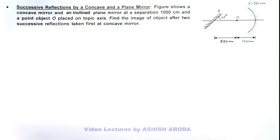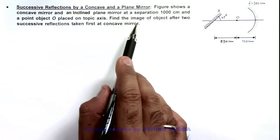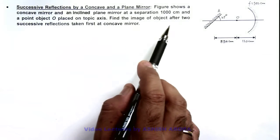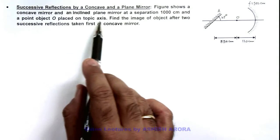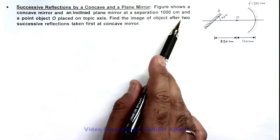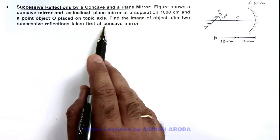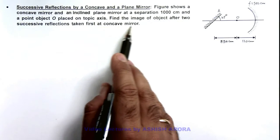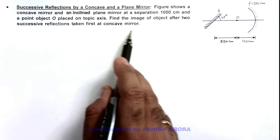In this illustration we'll study about successive reflections by a concave and a plane mirror. Here the figure shows a concave mirror and an inclined plane mirror at a separation of thousand centimeter, and a point object O placed on optic axis. We are required to find the image of object after two successive reflections taken first at concave mirror.